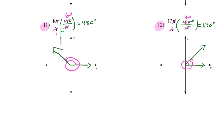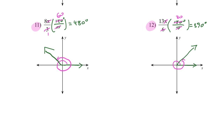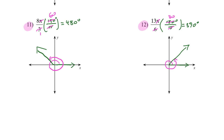For number 11, converting to degrees gives 480. Draw the initial side, go one full rotation of 360, then 120 more. For number 12, converting gives 390 — one rotation of 360, then 30 more. And that's it for this lesson — may the force be with you!